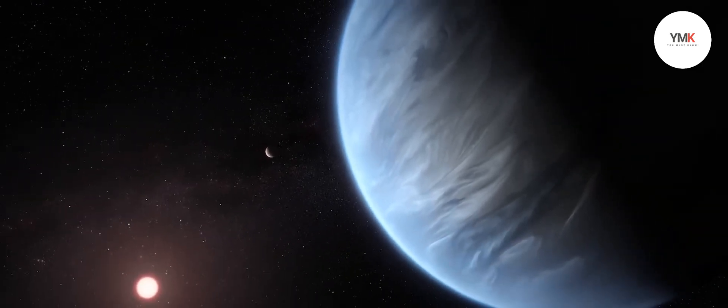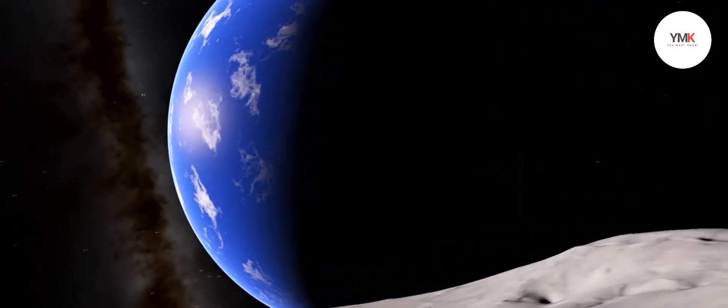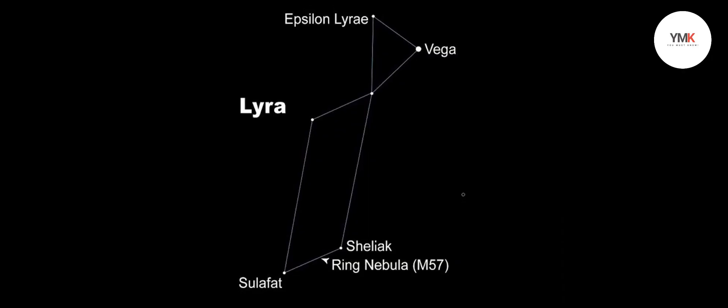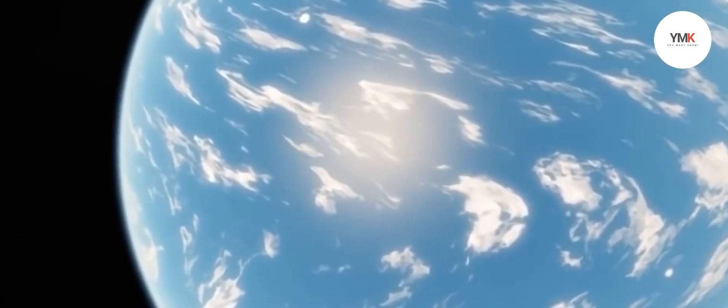This exoplanet or water world found is located in a planetary system that is about 218 light-years away in the constellation Lyra. The discovery of these two planets in the Kepler-138 system is not new because astronomers have discovered this system for a long time.